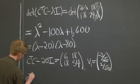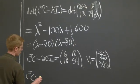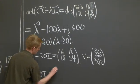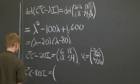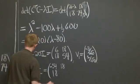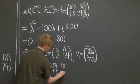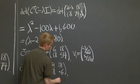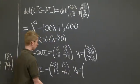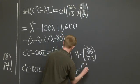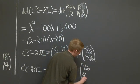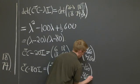Similarly, if we do C transpose C minus 80 times the identity, we'll get negative 54, 18, 18, and negative 6. And similarly, we can find that V2 will be 1 over square root of 10, 3 over the square root of 10.